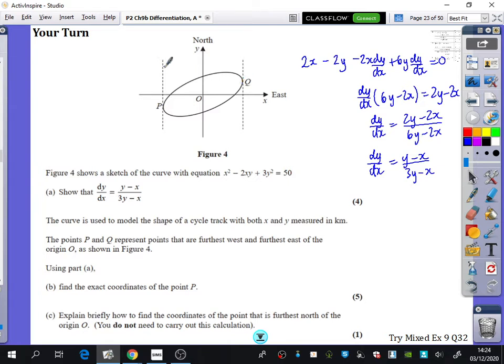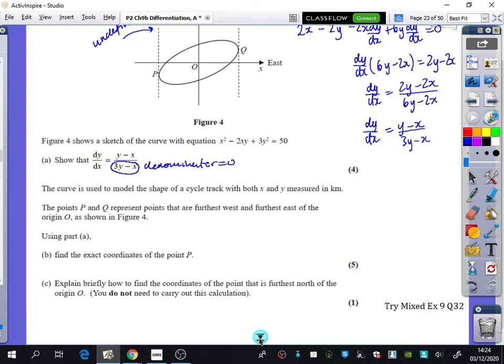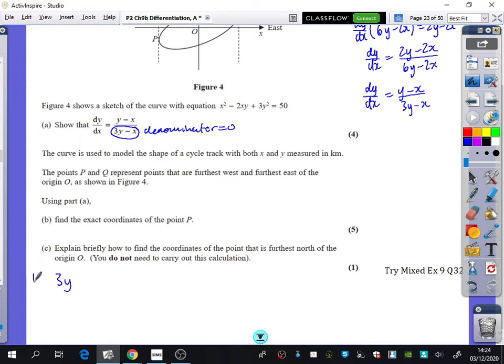So we know here, this is a tangent that has a gradient which is undefined. And so because the gradient is undefined, we want the denominator to be equal to zero. And then we're going to just do that same process of before, of taking the denominator being equal to zero and subbing it in. In other words, 3y minus x equals zero, or x is equal to 3y.